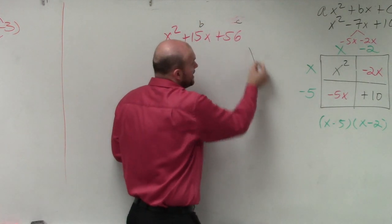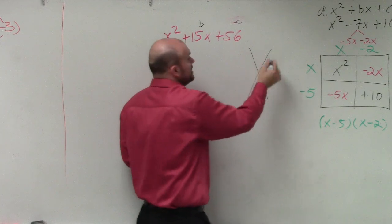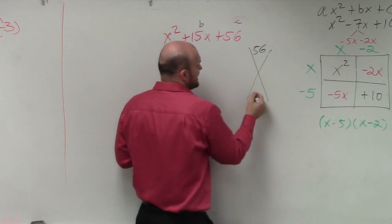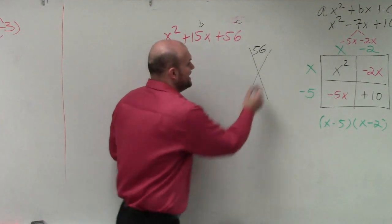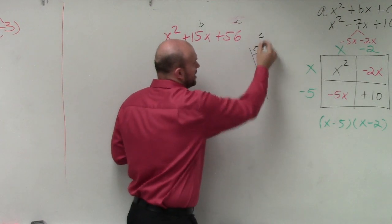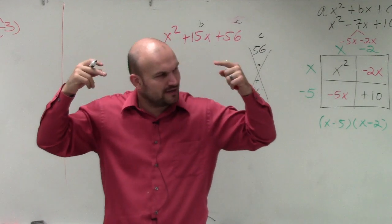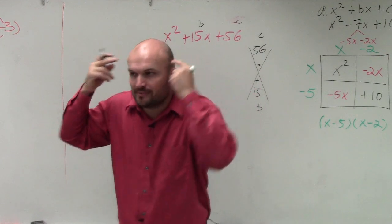When I'm doing this in my head, I basically want to think about what two numbers multiply to give me positive 56 and then add to give me 15. If you can't think of those two numbers off the top of your head, another way to do it: think about all the numbers that give you 56.